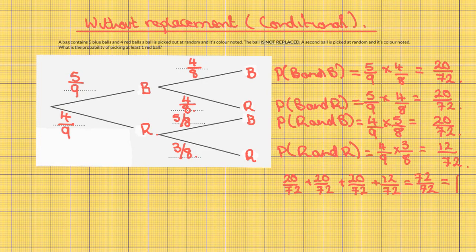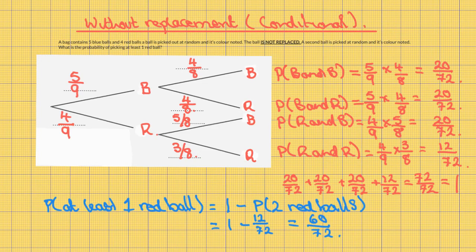Again, the probabilities add up: 20 out of 72 plus 20 out of 72 plus 20 out of 72 plus 12 out of 72 equals 72 out of 72, which equals 1, because one of those events is definitely going to happen. The probability of at least one red ball equals 1 minus the probability of two blue balls, which equals 1 minus 12 out of 72, which is 60 out of 72.